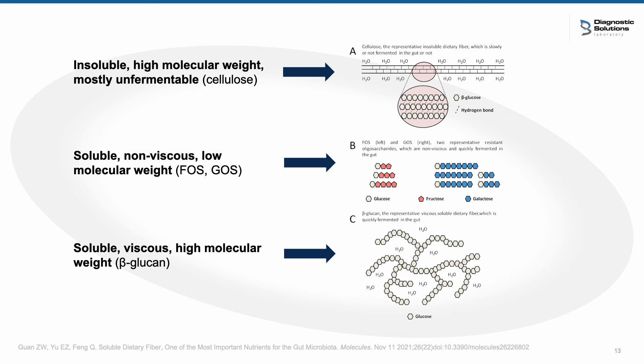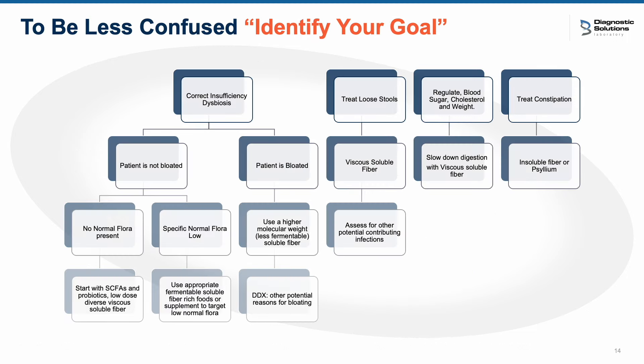Now that you know about the different types and actions of fiber, the best way to move forward is to identify your treatment goals for your patient. The main things we're treating are correcting insufficiency dysbiosis, helping with loose stools, regulating blood sugar, cholesterol, or weight, or treating constipation. Dr. Bell and I have put together a mind map to guide you as you work through patient cases and figure out which type of fiber is best suited. Dr. Bell will now speak further on specific fibers, and we also have a PDF for you to reference to make this translation into clinical care seamless.